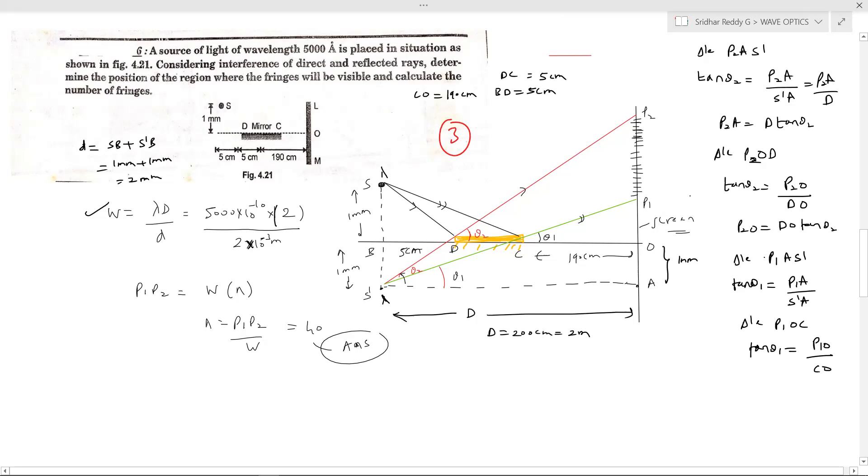Because what we needed is P2 P1. So P2 P1 equal to P2 O minus P1 O. P2 A further what you can write P2 O plus O A, and you can simplify all in this particular way. P2 O what you can write P1 P2 plus P1 O. So solving all this set of things, I'll get expression for P1 P2 value that I'll substitute here.